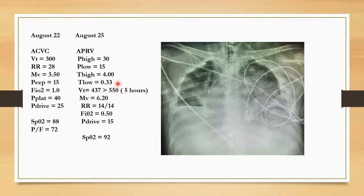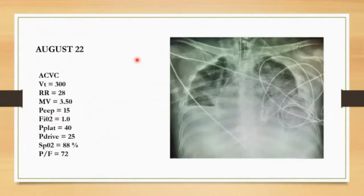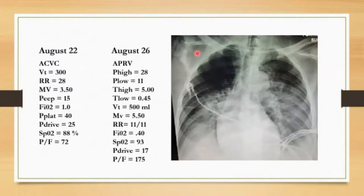Minute ventilation greatly improved — nearly double. We were able to improve blood gases, bumping pH upward, with a respiratory rate of 14 — compared to 28 chest movements per minute previously. FiO2 dropped from 100% to 50%. Drive pressure approached a safe region — the equivalent plateau at P-high is 30, the release is only 15. Saturation improved. By August 26th, we were able to lower P-high further, with P-low slightly lower, good tidal volume, and 11 chest movements per minute on 40% FiO2. The PF ratio improved from 72 to 175 — moving from severe to moderate ARDS.